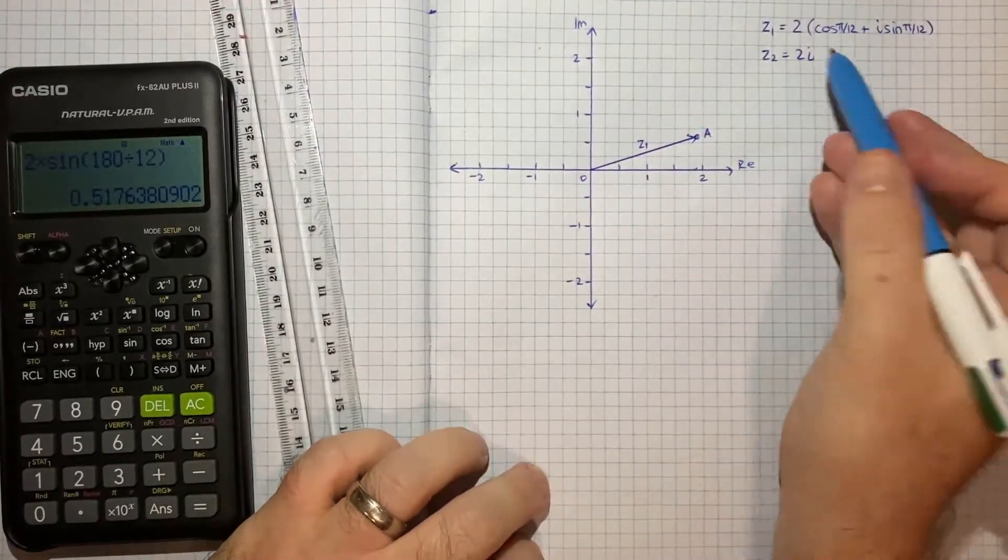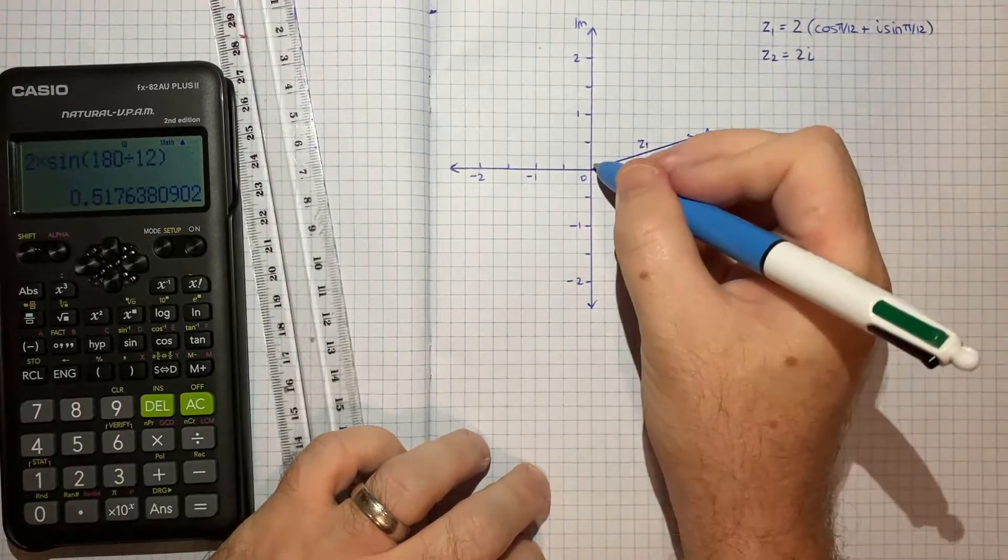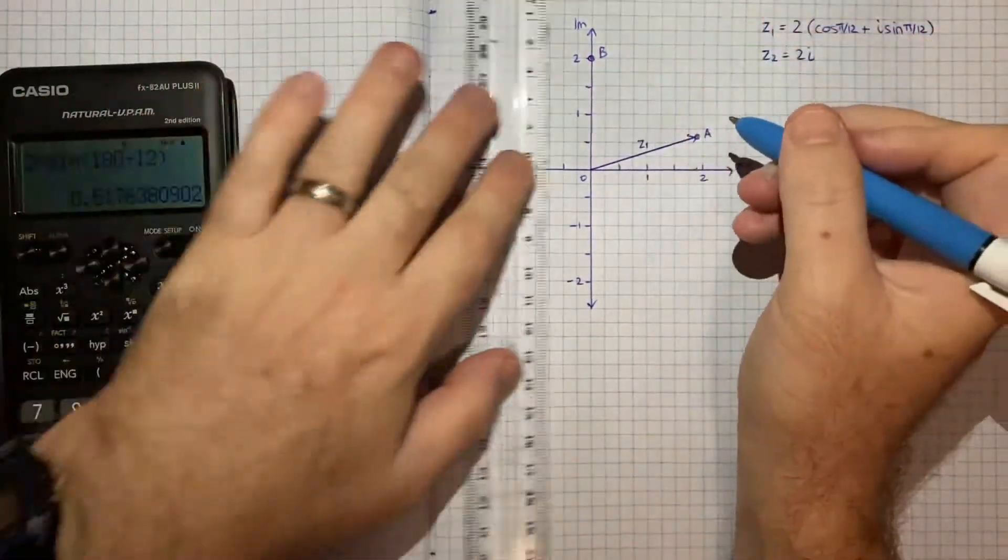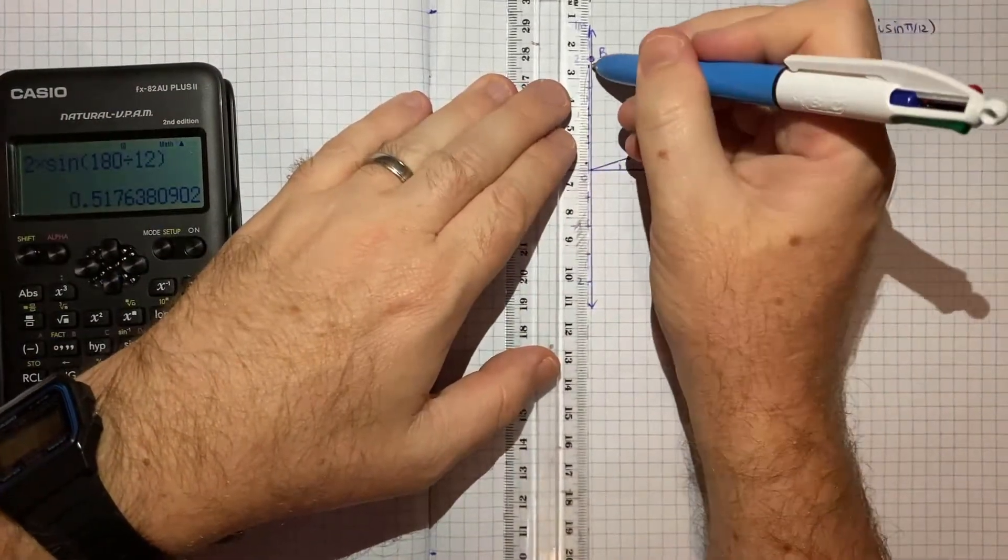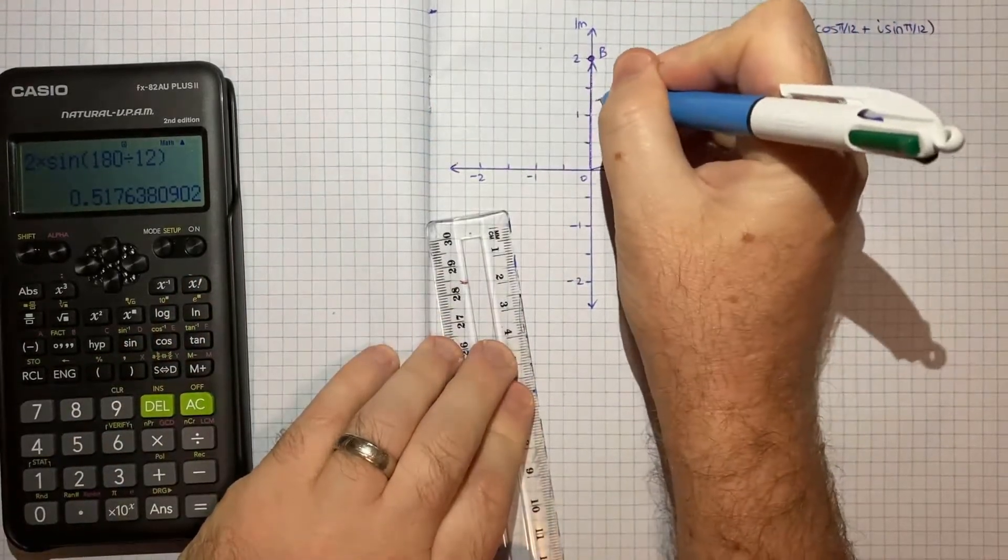Now for z2, that's a lot simpler. We've got no real part, and the imaginary part is 2. So we can plot that here. So that's point B. And from the origin up to that point B, that vector is the vector z2.